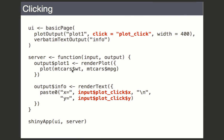Let's look at the code — it's really simple to use. With plotOutput we now add click equals 'plot_click'. That's the same as your regular plot output, except you add this new option. Click equals 'plot_click' defines a new input value called plot_click with X and Y positions. In the render plot, I'm generating text for the X and Y position as input$plot_click$x and y — that's all there is to it.